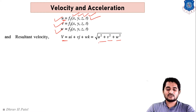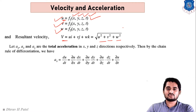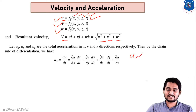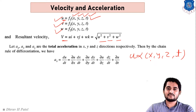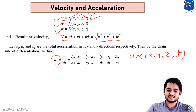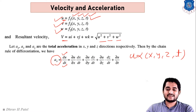Now let us understand acceleration. Acceleration is also a vector quantity which depends on x, y, z and time. In the previous lecture we understood that if any parameter depends on more than one variable, it can be represented by partial differentiation. So we have to differentiate acceleration by partial differentiation. Acceleration in the x-direction is du/dt, which depends on x, y, z as well as time.